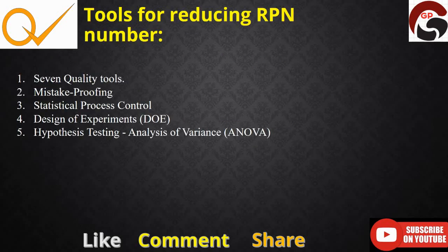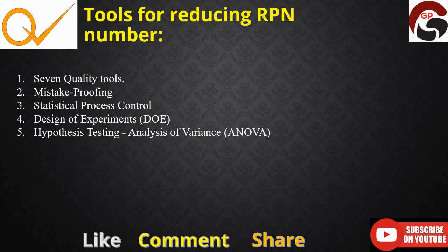There are popular tools used to reduce the relative risk and reduce the severity, occurrence, and detection rankings. These include the seven quality tools, mistake proofing, SPC, Design of Experiments (DOE), hypothesis testing such as analysis of variance. Some organizations also take a separate six sigma project to reduce the severity, occurrence, or detection ranking using these tools to reduce the RPN number.